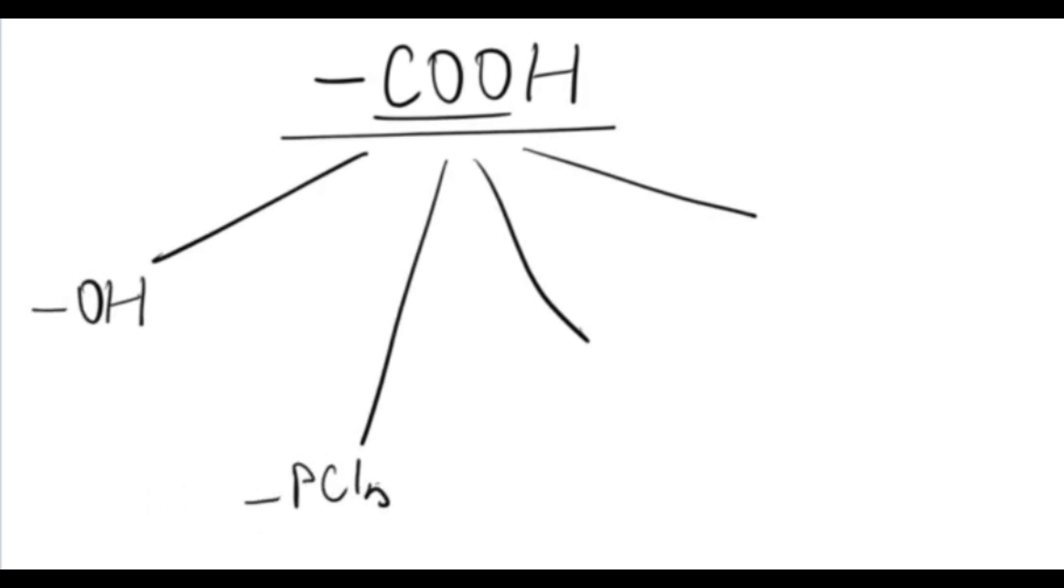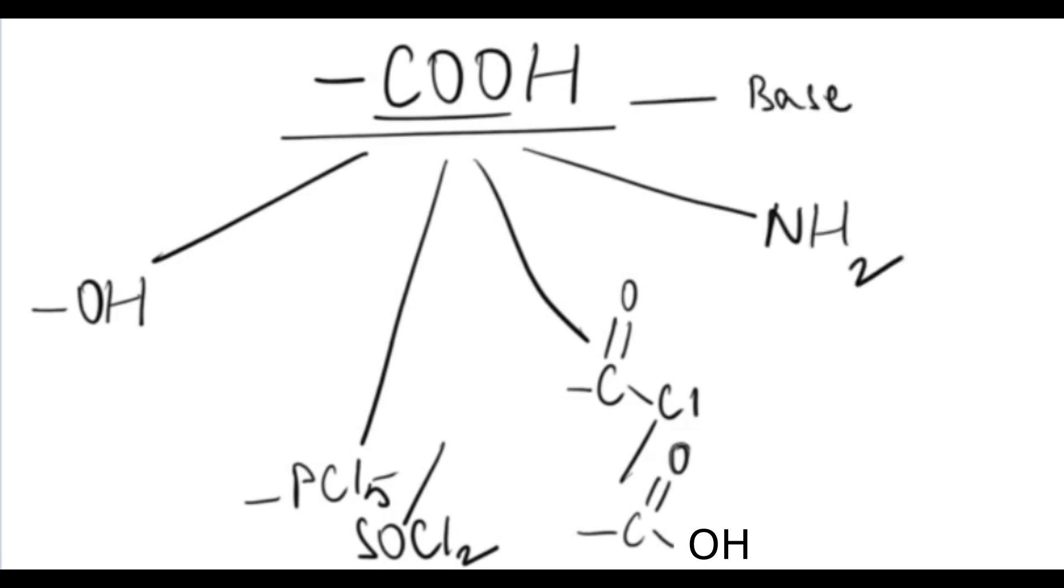So it can undergo several reactions. With alcohols it can form esters. With phosphorus pentachloride or thionyl chloride, it can form acyl chlorides or acyl halides. With acyl halides or with carboxylic acids themselves, it can form anhydrides. With amine it can form amides, and with bases or metals it can form salts.